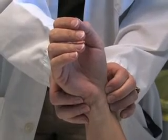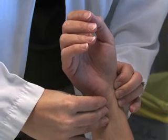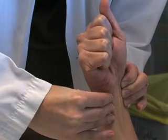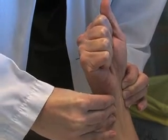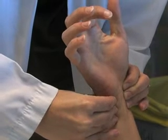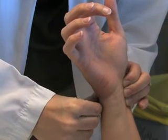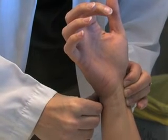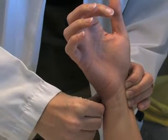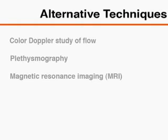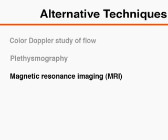To perform the Allen test, occlude both the ulnar and radial arteries. Instruct the patient to make a fist to drain the blood from the hand for approximately 30 seconds. Instruct the patient to unclench the fist — the palm should appear blanched or pale. Now release pressure only from the ulnar artery. Adequate collateral circulation is indicated by the return of normal colour within 10 seconds. Alternative techniques include colour Doppler flow study, plethysmography, and MRI, which are more often used when assessing the radial artery for invasive procedures such as arterial harvesting for coronary bypass.